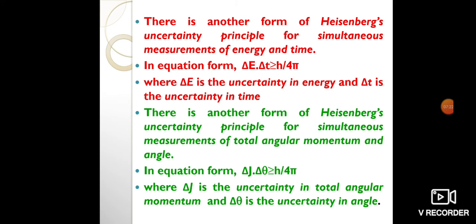There is another form of Heisenberg's uncertainty principle for simultaneous measurements of total angular momentum and angle. In equation form, ΔJΔθ ≥ h/4π, where ΔJ is the uncertainty in total angular momentum and Δθ is the uncertainty in angle.